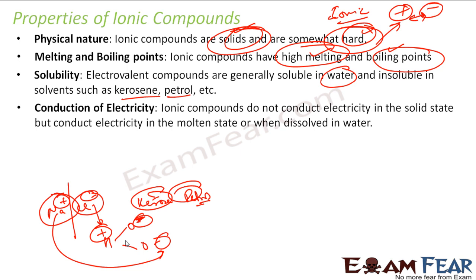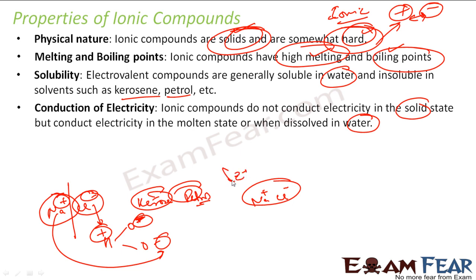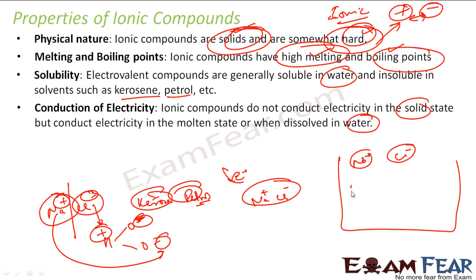Conductivity of electricity: ionic compounds do not conduct electricity in solid state, but when they are dissolved in water, they conduct electricity. Because NaCl — they are very happy together, they do not bother about electrons. But the moment it dissolves in water, it becomes Na plus and Cl minus because water has H2O with hydrogen slightly positive and oxygen slightly negative. So it dissolves.